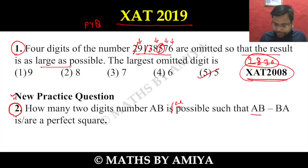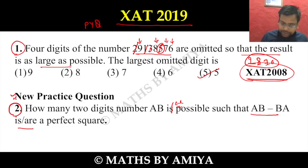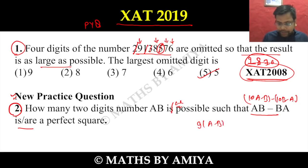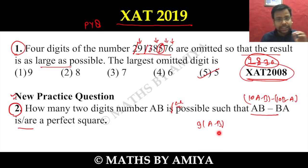We know AB is nothing but 10A + B, and BA is nothing but 10B + A. If we subtract these two numbers, we get 9(A − B). So we want 9(A − B) to be a perfect square.